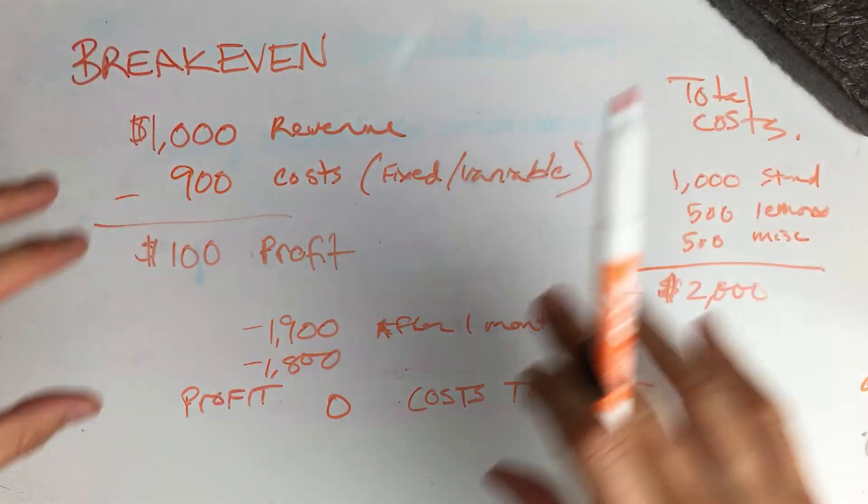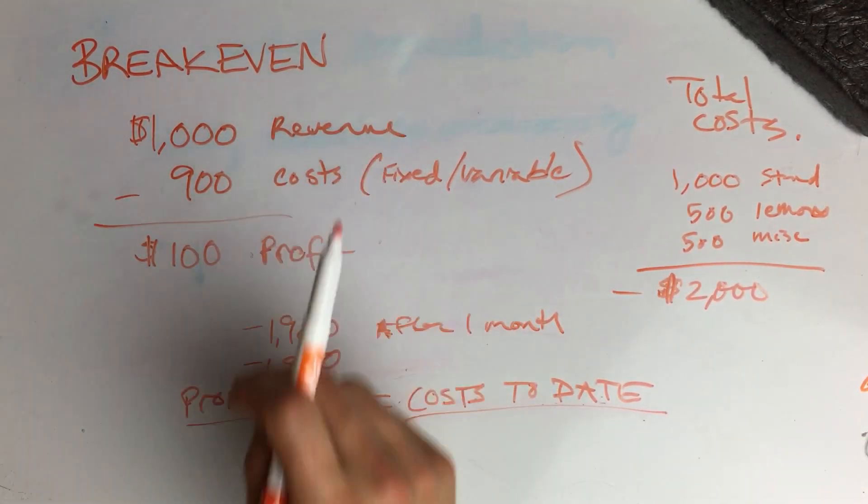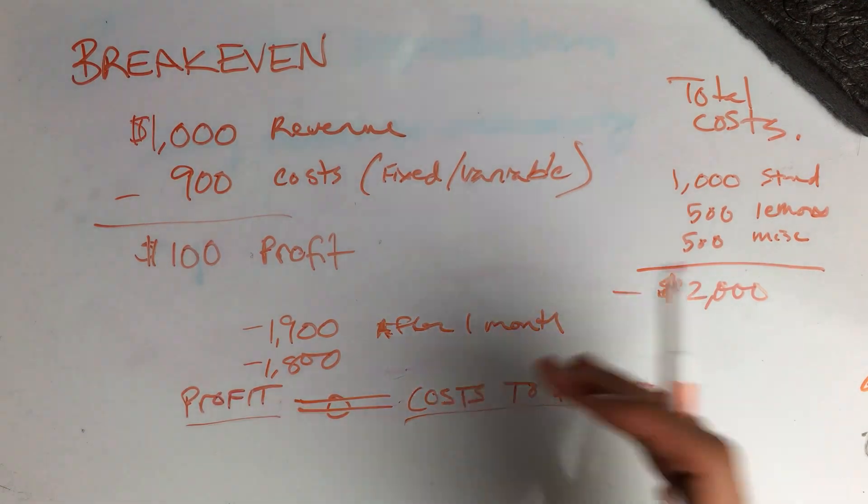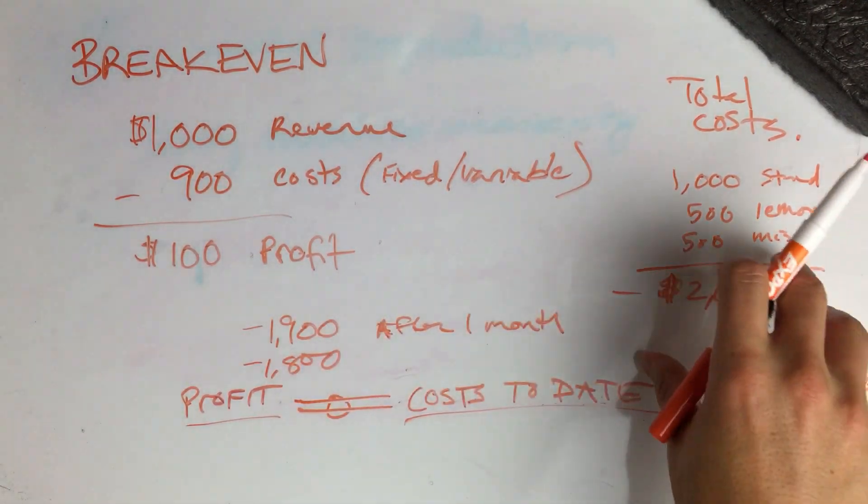Where the cost to date equals your profit, that is your break-even point. That's your zero there. That's when everything has been balanced and you've recouped all your costs, and now you're actually making profit that is net total value over everything you've spent initially.